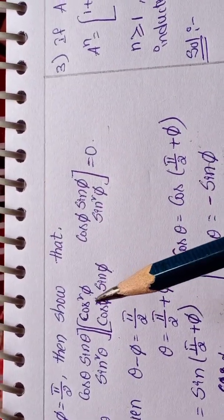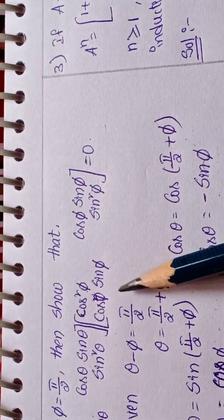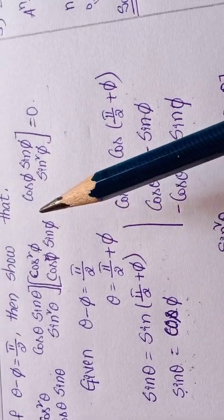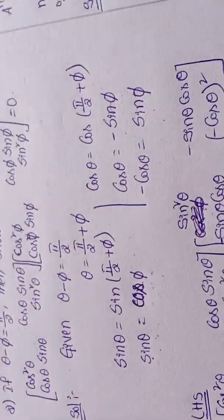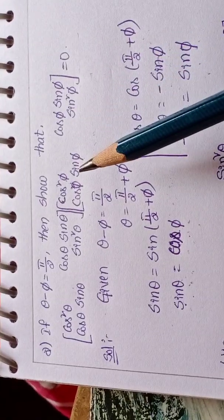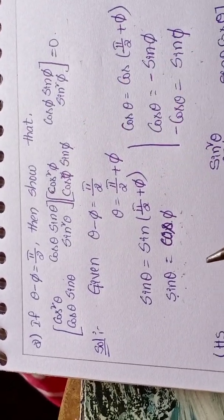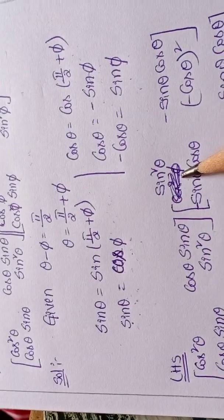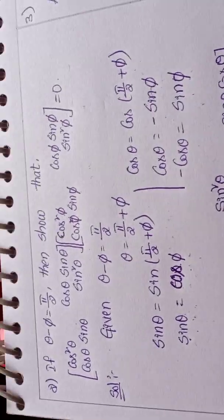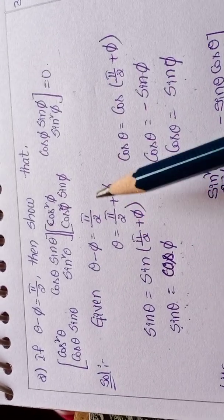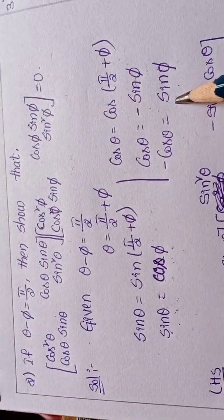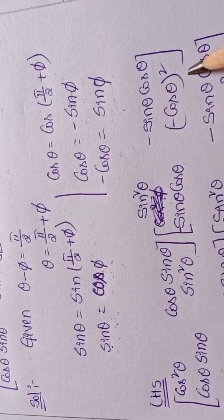Now substitute in the place of cos squared pi, cos pi, sin pi. Convert in terms of theta. LHS: cos squared theta, cos theta sin theta, cos theta sin theta, sin squared theta, into cos squared pi. Cos pi means sin theta, sin squared theta. Cos pi means sin theta, sin pi means minus cos theta, minus sin theta cos theta. Sin squared pi means sin pi means sin theta, minus cos theta, whole square.